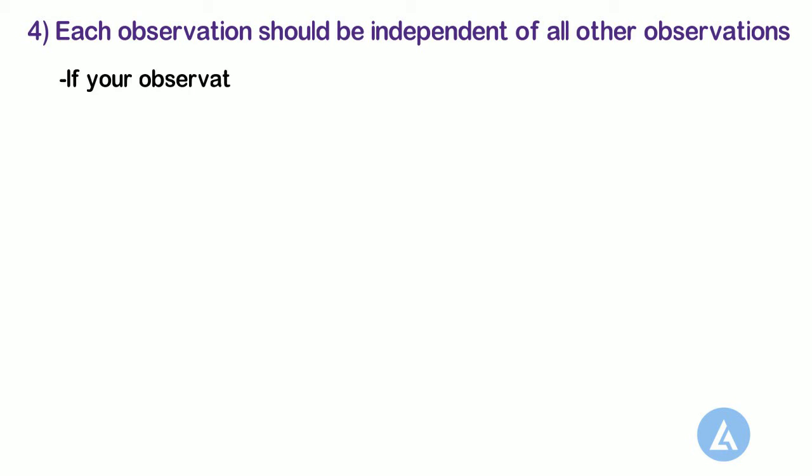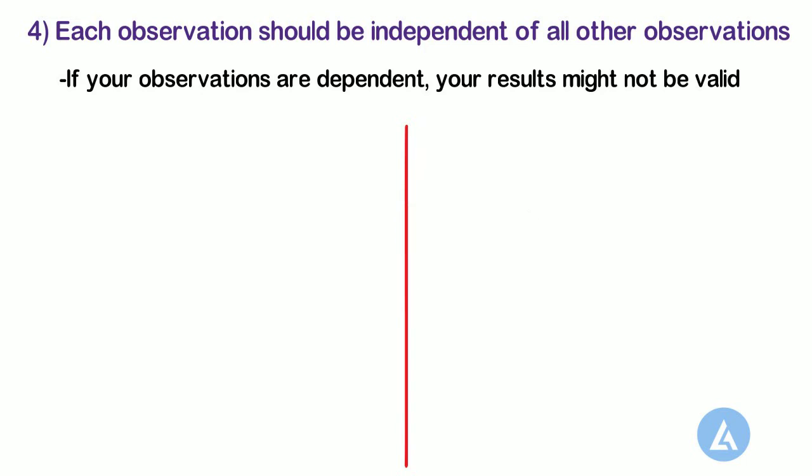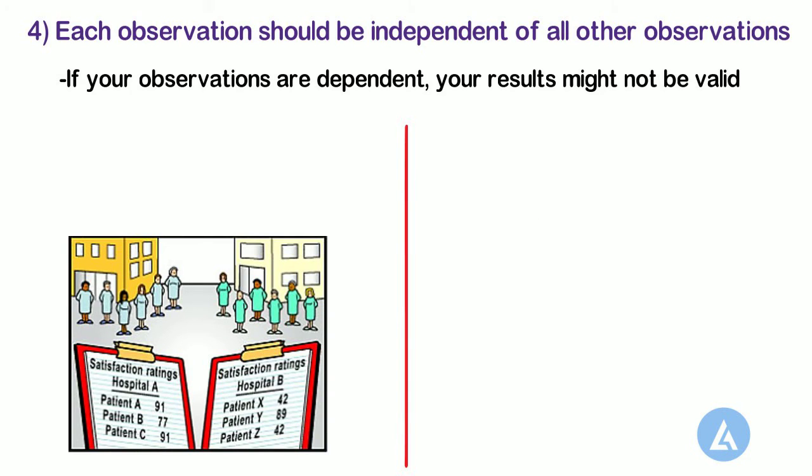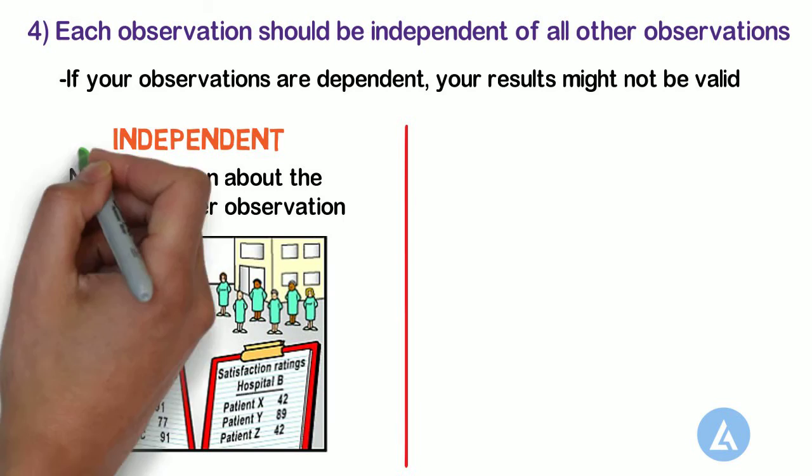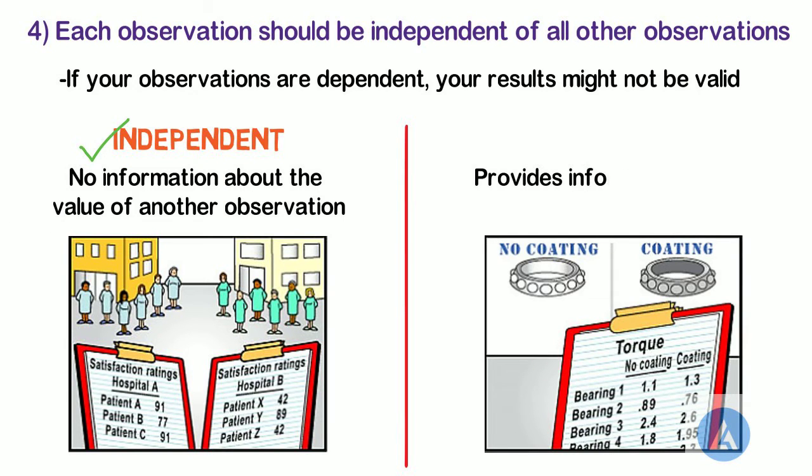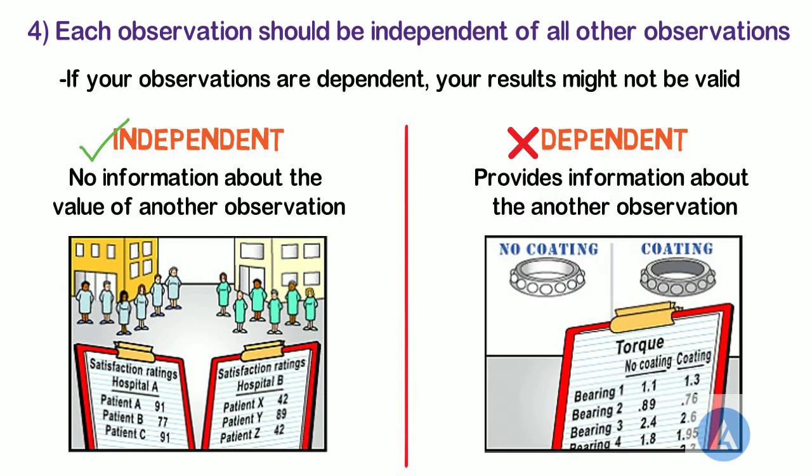Fourth, each observation should be independent of all other observations. If your observations are dependent, your results might not be valid. Consider the following points to determine whether your observations are independent. If an observation provides no information about the value of another observation, the observations are independent. If an observation provides information about another observation, the observations are dependent.